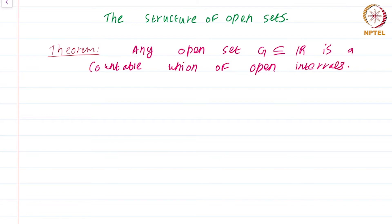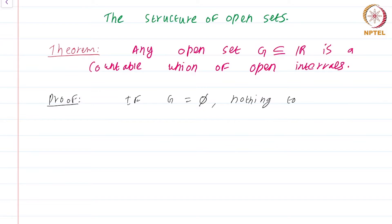Here, countable of course includes the possibility of finite. For the proof: if G is empty, there is nothing to prove, because the empty set is trivially an interval by our definition of an open interval. G is just the union of one open interval, which is the empty set.